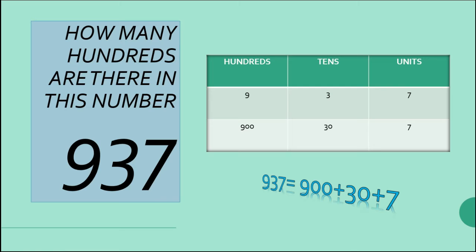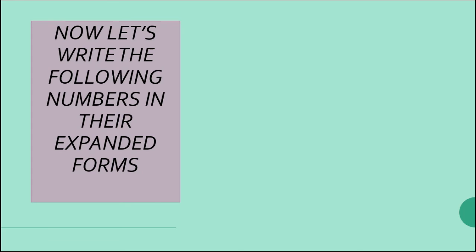Now let us see: this is the expanded form using place value. We need to know and observe the hundreds, tens, and units place values.